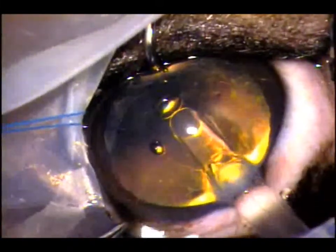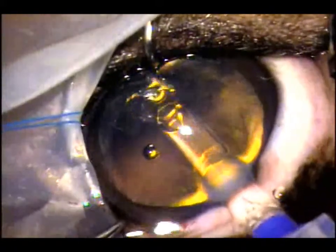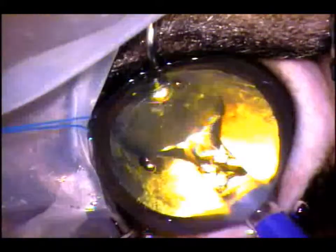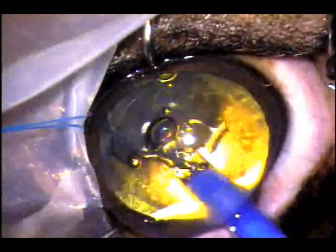The lens capsule will keep the lens stable, and in many cases, before the invention of the capsular tension ring, we would not have been able to put a lens in, leaving the dog aphakic, which would have functionally affected vision.